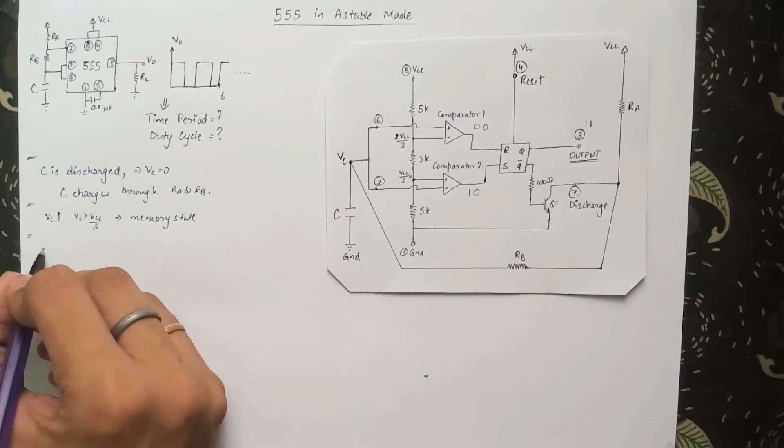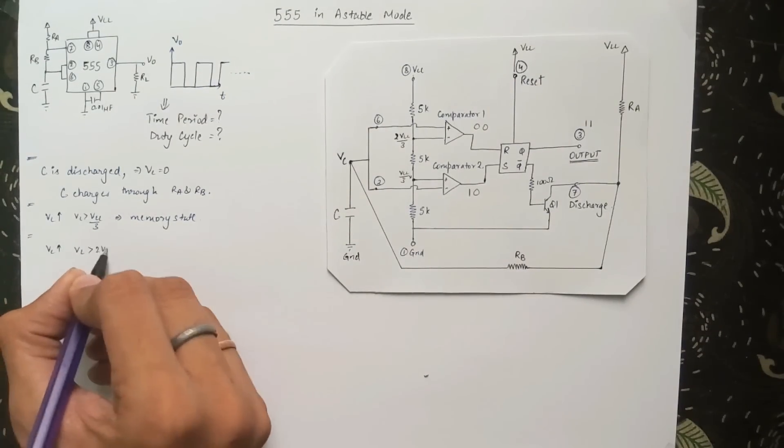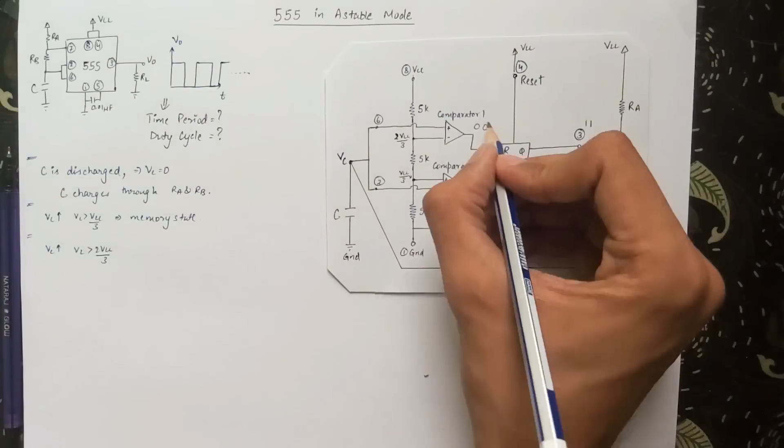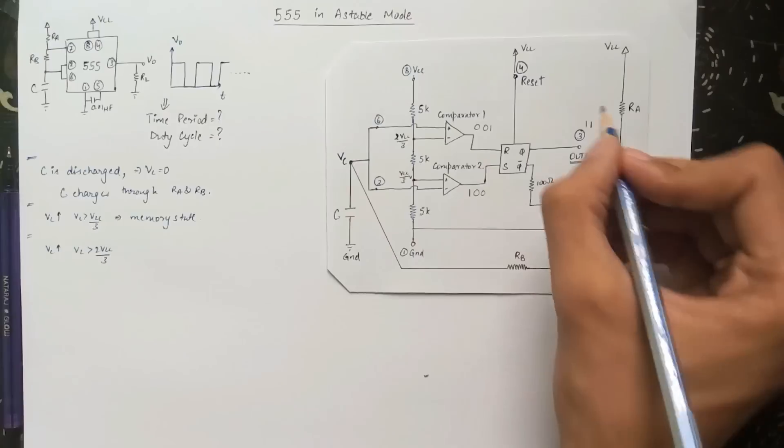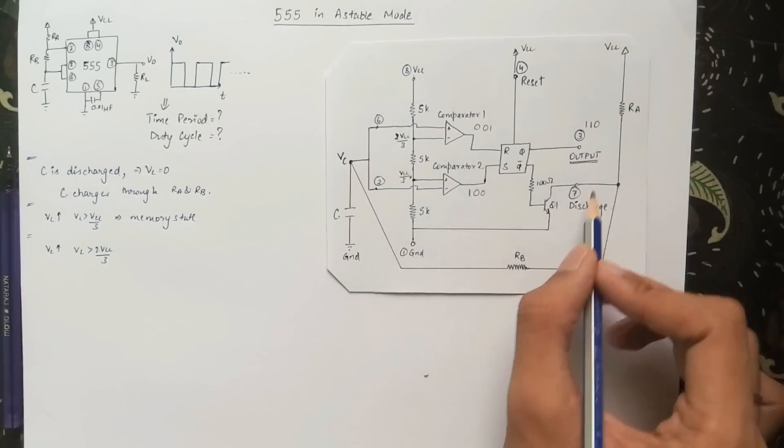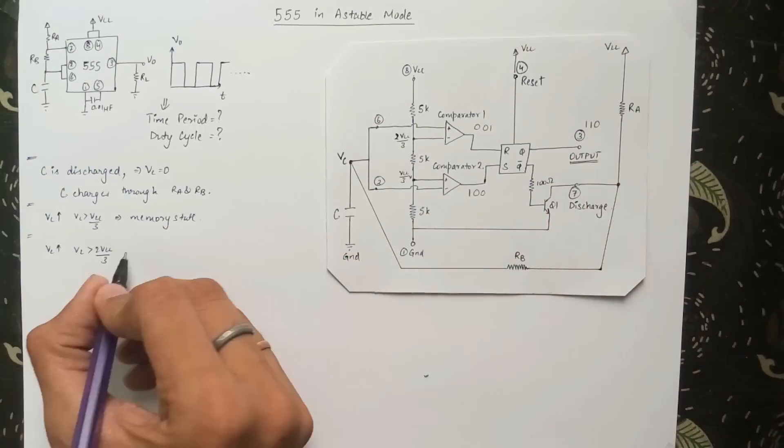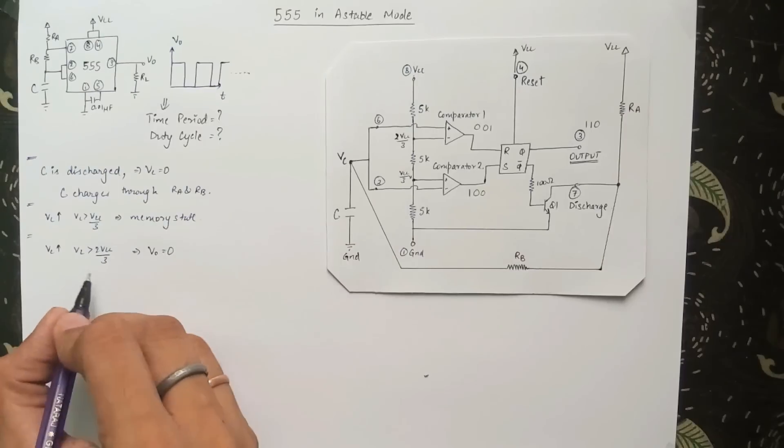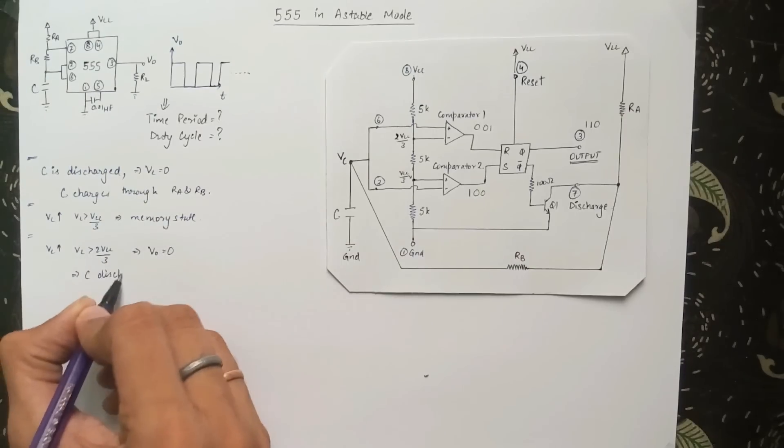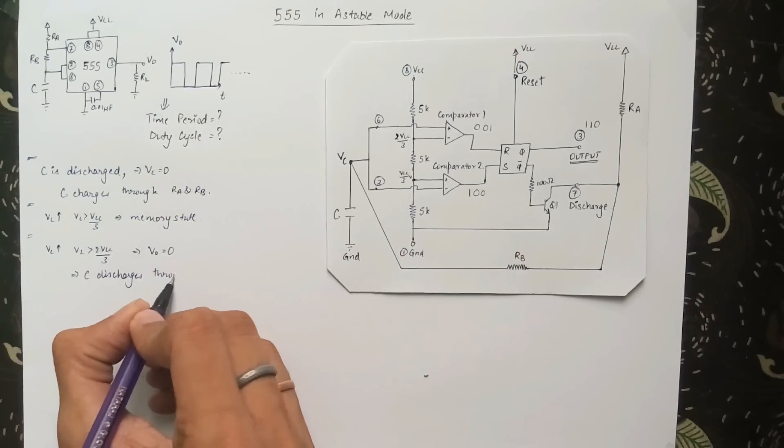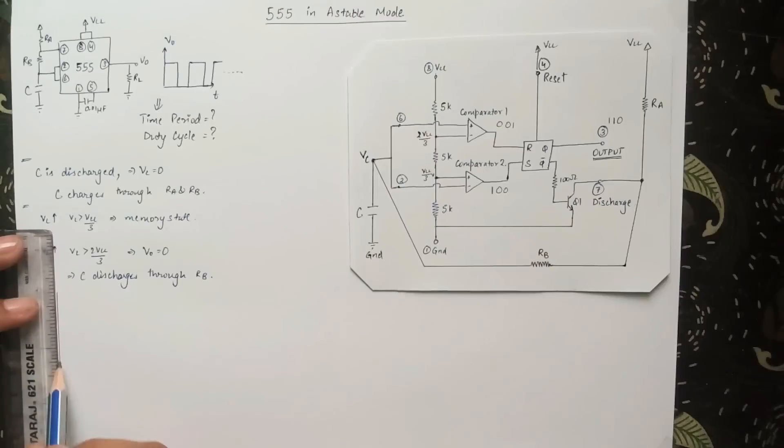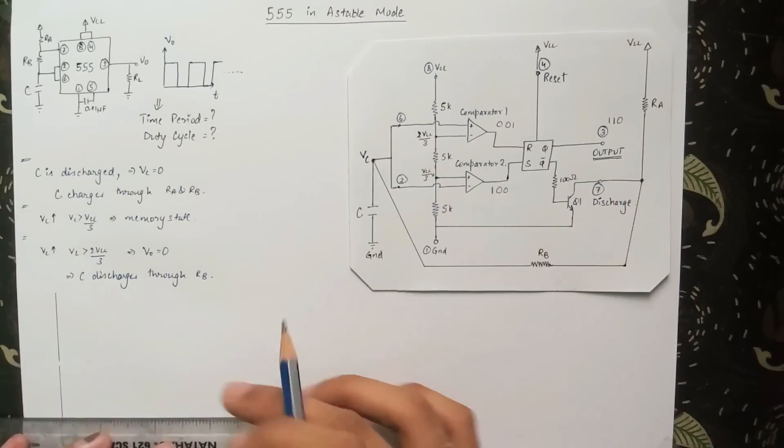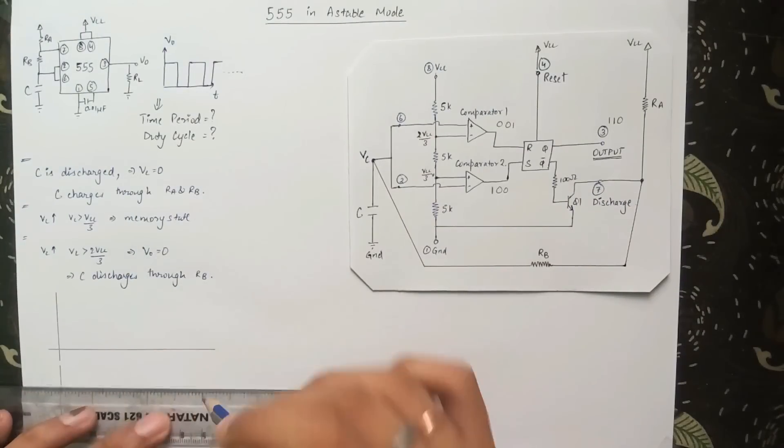Once the voltage across the capacitor rises above 2Vcc by 3, the output of comparator 1 switches to high and the output of comparator 2 still remains low. For this case, the output is logic low and there is a short circuit between pin 7 and ground. Therefore, the capacitor starts to discharge through RB. Now let's plot the voltage across the capacitor and the output voltage until now.